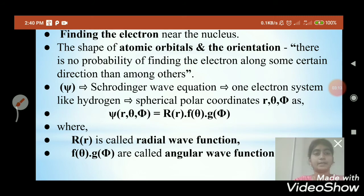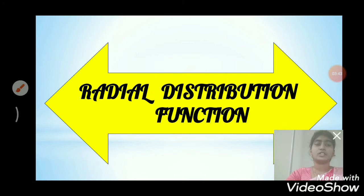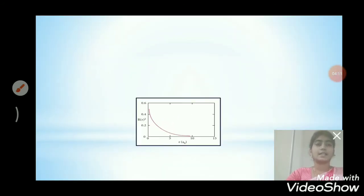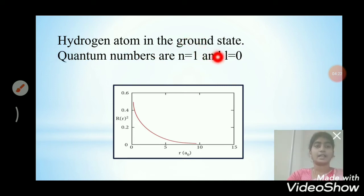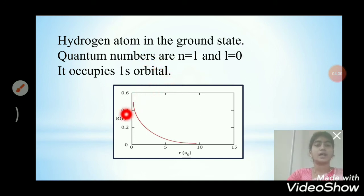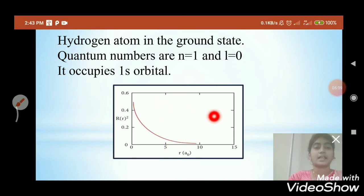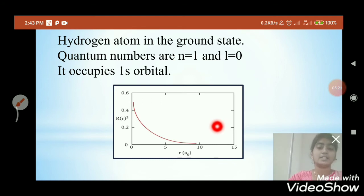Now let's see the radial distribution function. Consider a single electron of a hydrogen atom in the ground state, for which the quantum numbers are n = 1 and l = 0 — that is, it occupies the 1s orbital. The plot of R² against R for the 1s orbital shows that as the distance between the electron and the nucleus decreases, the probability of finding the electron increases. At R = 0, the quantity R is maximum — that is, the maximum value of psi² is at the nucleus.